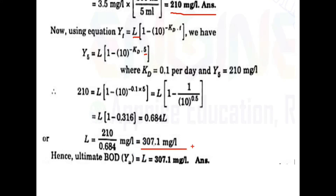So to summarize: the BOD after 5 days is equal to 210 mg per litre, and the ultimate BOD is equal to 307.1 mg per litre. We will see the next video. Thank you.